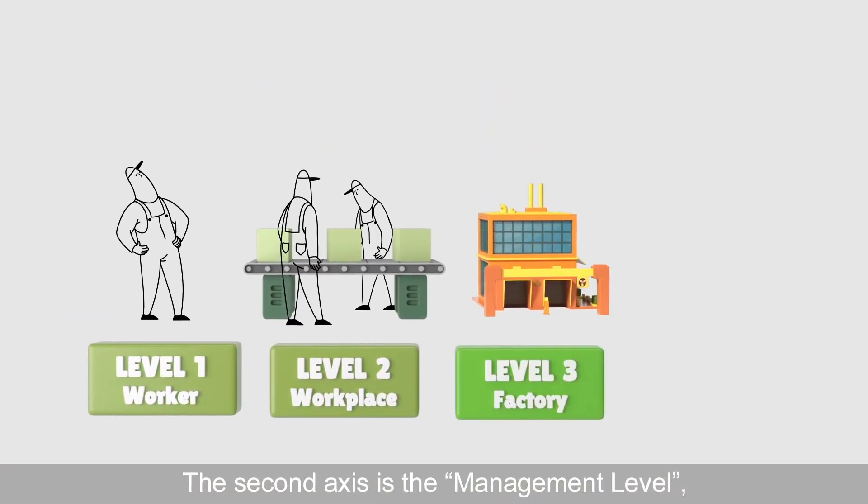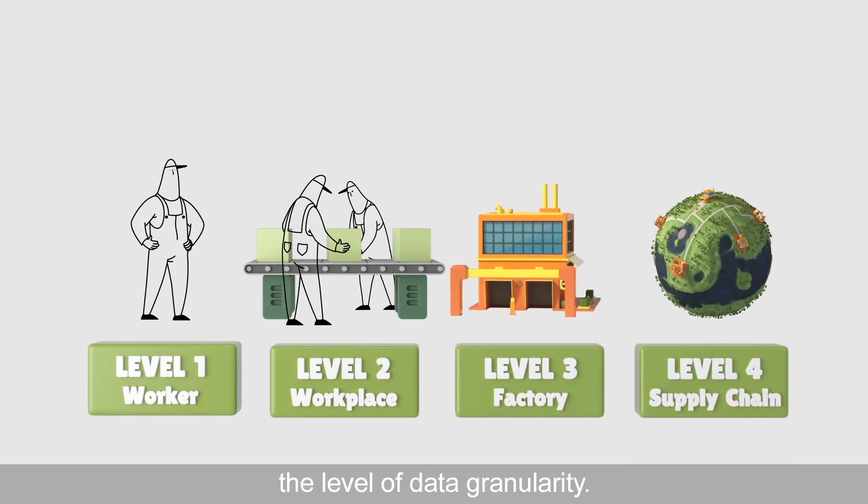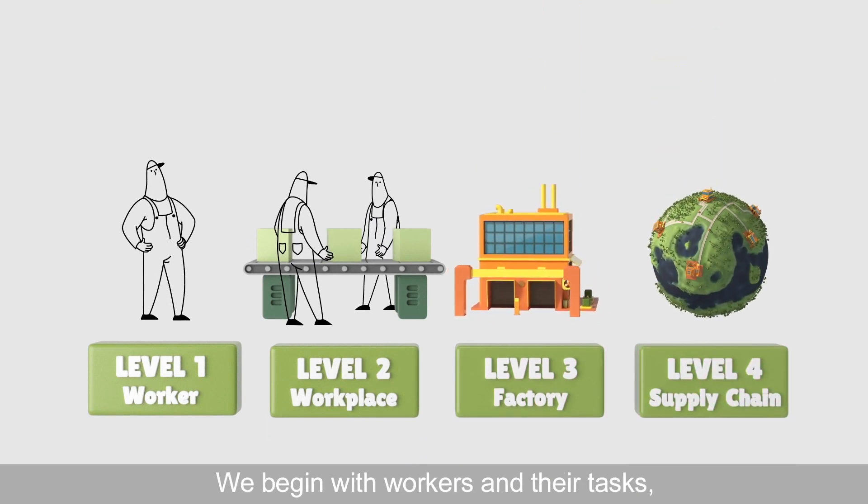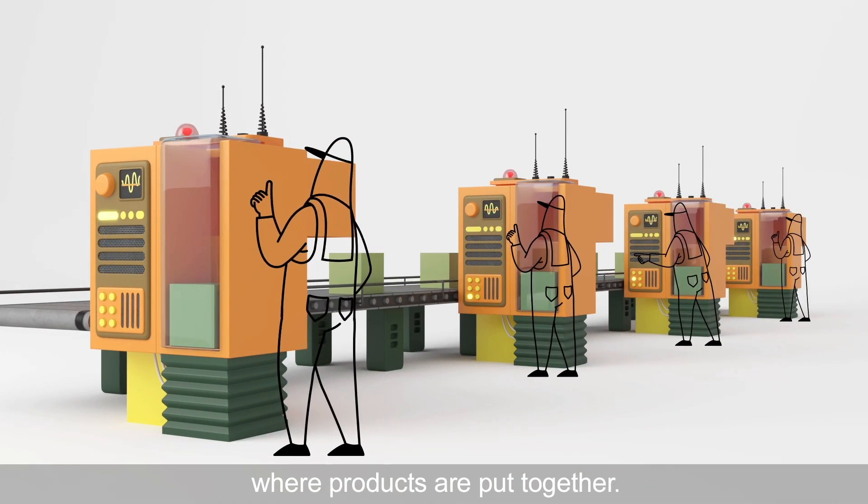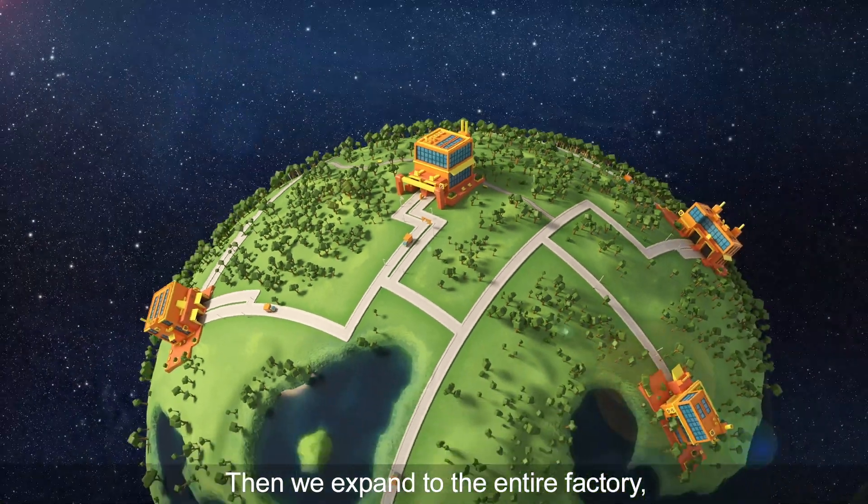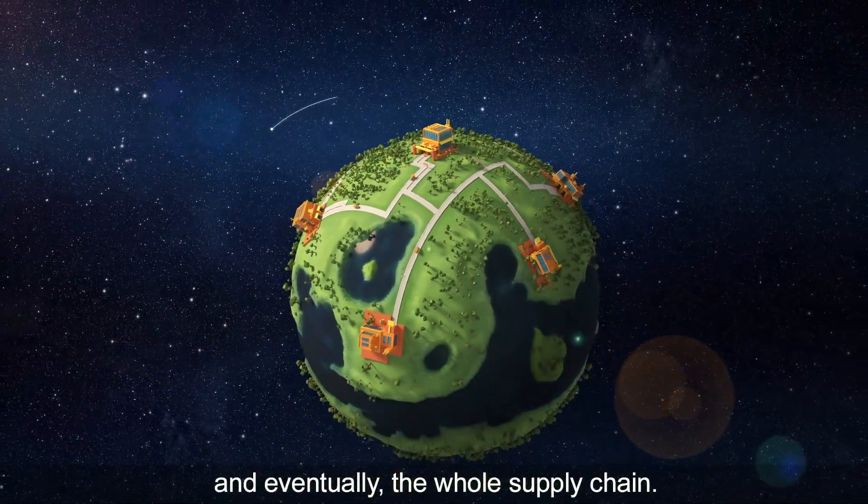The second axis is the management level - the level of data granularity. We begin with workers and their tasks, and then scale up to the workplace where products are put together. Then we expand to the entire factory, and eventually, the whole supply chain.